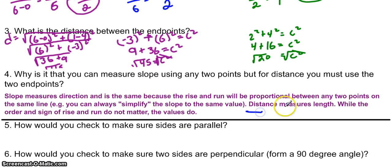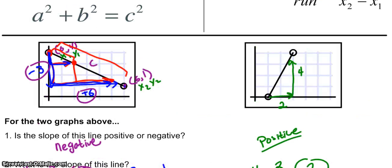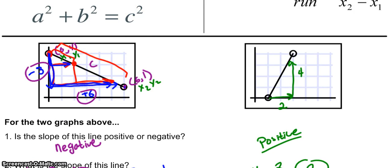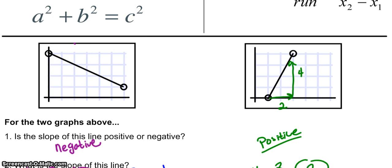However, distance measures length. While the order and sign of rise and run won't matter for distance, the values do. What that means is that in a graph like this, the sign like going up, going down, left, right, doesn't quite matter for distance.